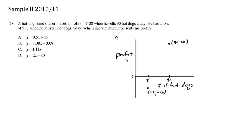Which linear relation represents his profit. So we have two points and when we have two points we can find the slope. The slope here is going to be rise over run.